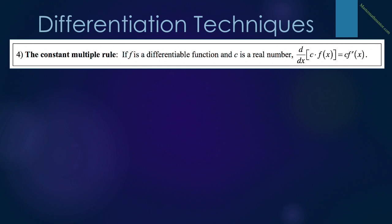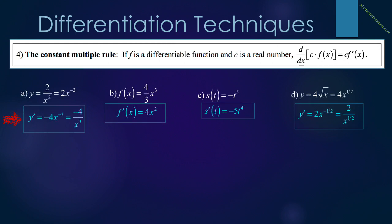The fourth rule is called the constant multiple rule. It says that if f is a differentiable function and c is a real number, then the derivative of c times f of x equals c times f prime of x. This means we can take the constant outside and simply multiply it by the derivative of the function.